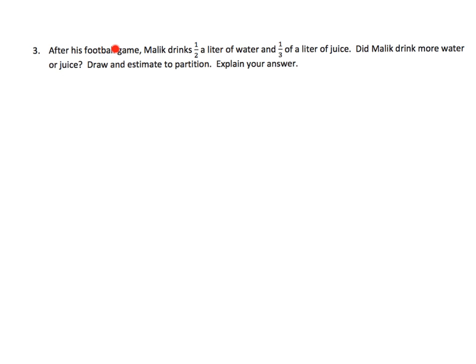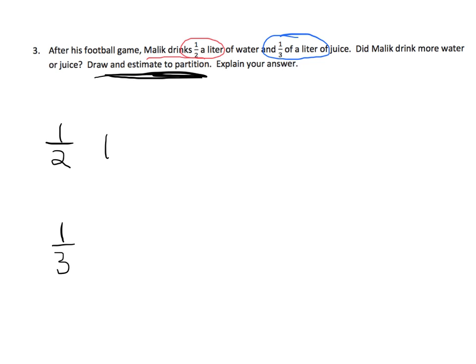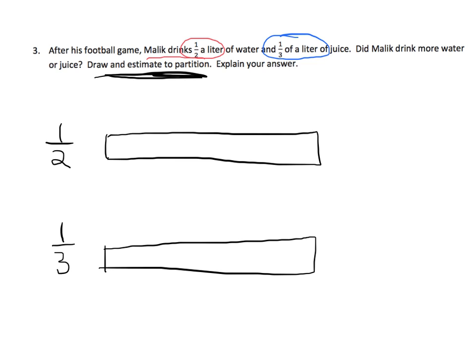For this problem: after his football game, Malik drinks one half of a liter of water and one third of a liter of juice. Did Malik drink more water, or more juice? The problem says to draw and estimate to partition. So we're going to draw a fraction strip for one half and a fraction strip for one third — two identical tape diagrams. We cut the first one into halves and shade in one half, then cut the second into thirds and shade in one of those pieces.